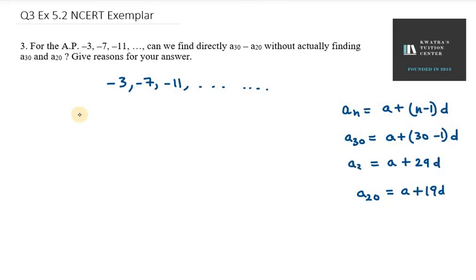So we know the value of A30 and A20. Let's find the common difference for this AP. The difference is minus 7 minus minus 3, which equals minus 7 plus 3, which is minus 4.